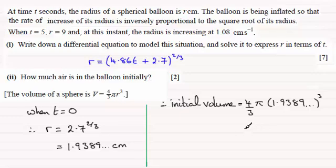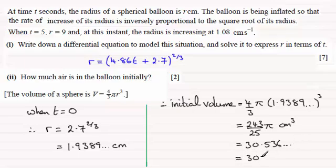And if you work that out as an exact answer in terms of pi you get 243 divided by 25 pi. And that would be measured in centimetre cubes. Now you can have that answer or you could work this out as a decimal, in which case you'd get 30.536 and so on, and if we round that to say 3 significant figures it's going to be 30.5 centimetre cubes to three significant figures, 3SF for short.